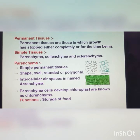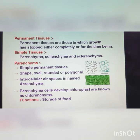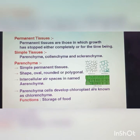What is parenchyma? Parenchyma tissue is a simple permanent tissue. Its shape is oval, rounded, and polygonal. In the diagram, parenchyma has intercellular spaces — the gap between cells is called aerenchyma. When parenchyma cells develop chloroplasts, they are known as chlorenchyma — that is why they appear green. The function of parenchyma is storage of food.